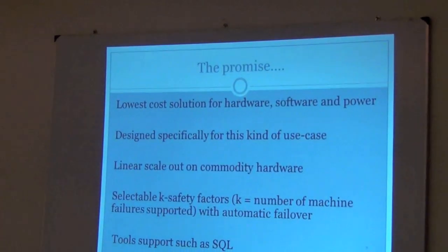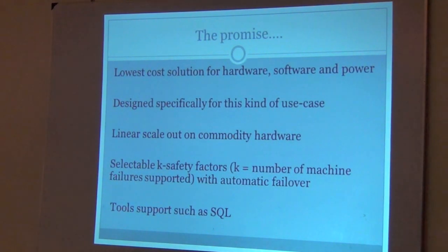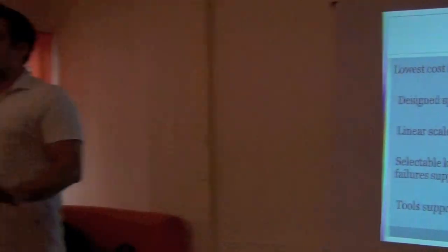Columnar databases was one of the things that came up. We looked at VectorWise and HardSell. Columnar databases, instead of storing data in rows, store data in column structures where sets of columns make up a table. Both of these work very well in terms of performance and giving us the capability to do real-time analytics. They were promised as the lowest-power solution for hardware, software, and power, and they're designed specifically for real-time analytics and streaming use cases. They scale linearly.